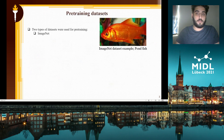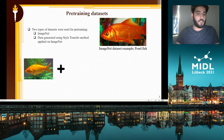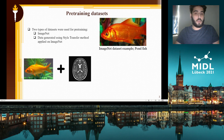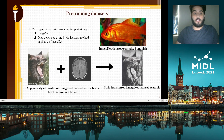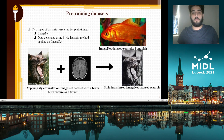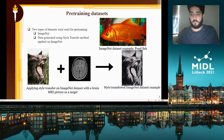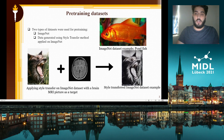For the pre-training dataset, we used ImageNet and a data augmentation approach using a style transfer method applied on ImageNet. Basically, we take an ImageNet image and the target style image will be an MRI head scan, and the output will be a style-transferred ImageNet example. We varied the target MRI images in order to avoid bias towards a specific target image, and used this method to bias our model towards the shape and texture of MRI scans.